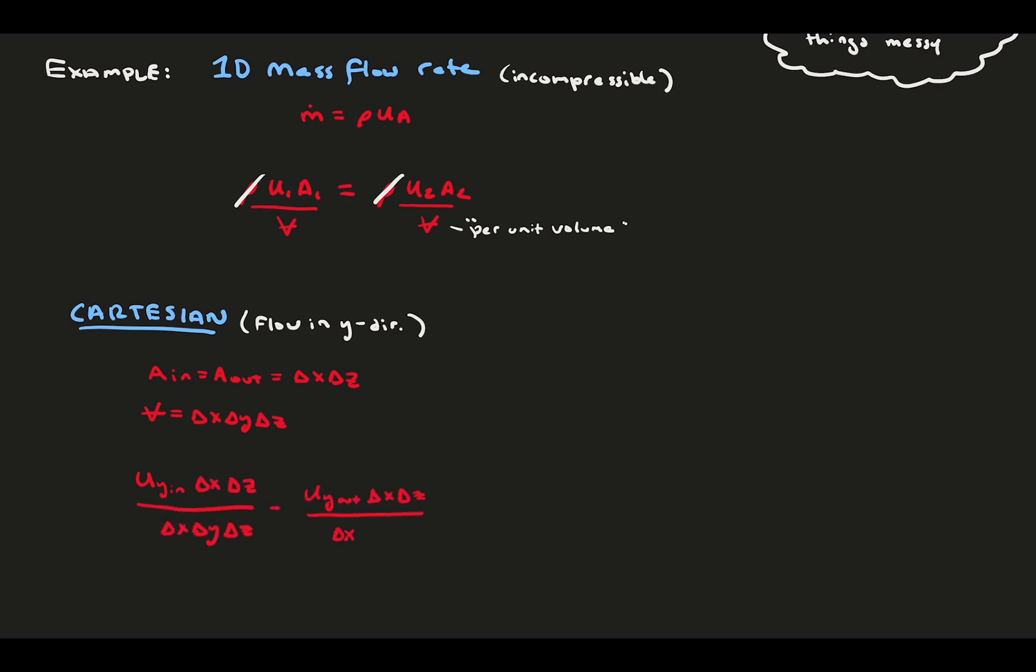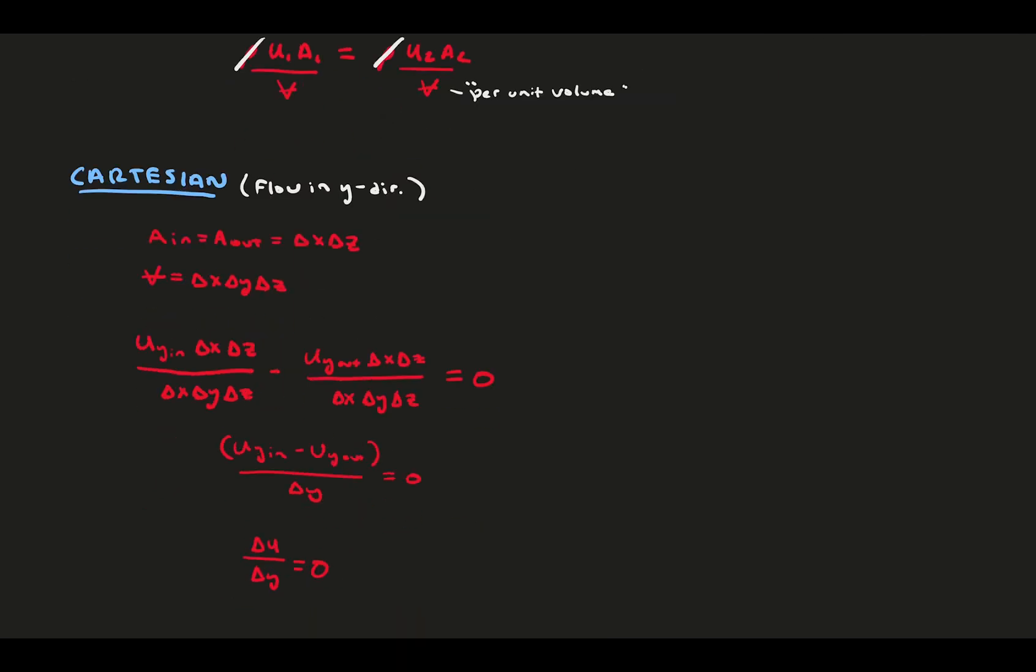Plug these into the equations above, defining that the velocity out minus velocity in must be delta velocity, gives us dv dy equals zero. This is one of the main terms in conservation of mass, and it's how we derive conservation of mass for Cartesian coordinates.